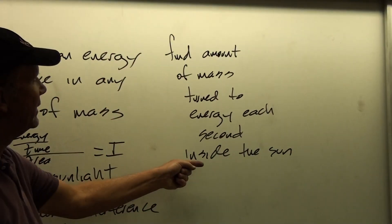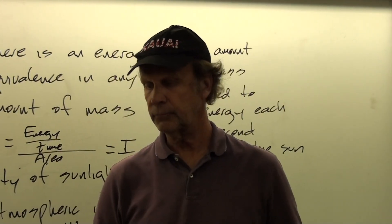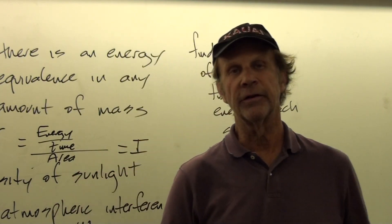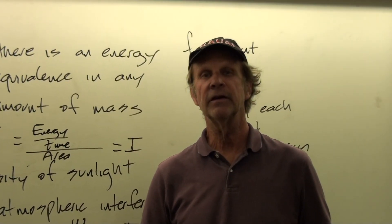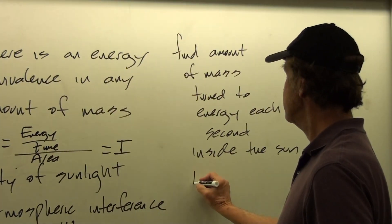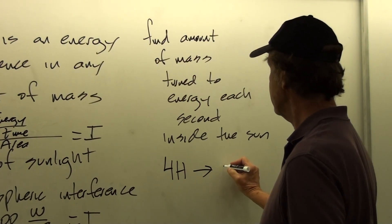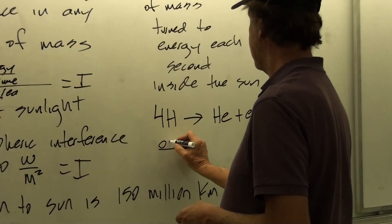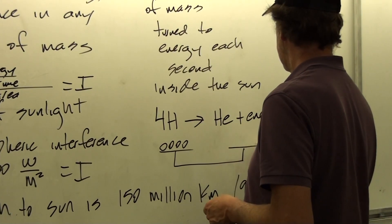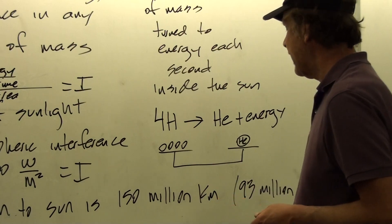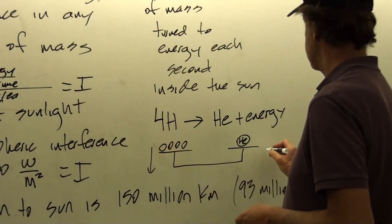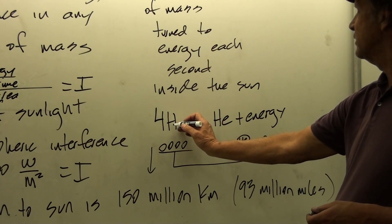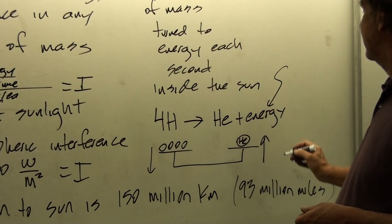We haven't yet talked about the energy mechanism that powers the Sun. It's nuclear fusion. In a nuclear fusion reaction, which we'll talk about much more later, four hydrogen atoms turn into helium plus energy. If we weigh the four hydrogen atoms before the reaction and compare that to the weight of the helium atom after, the helium is lighter than the four hydrogen — and the energy is the mass difference between the four hydrogen and the helium.